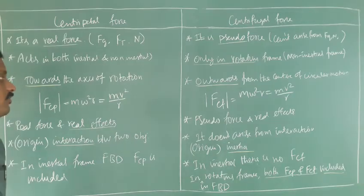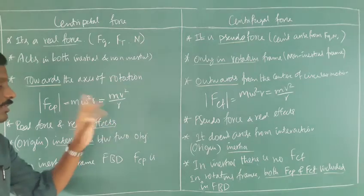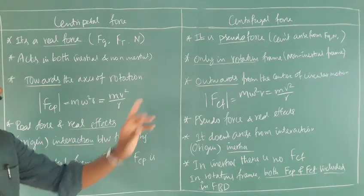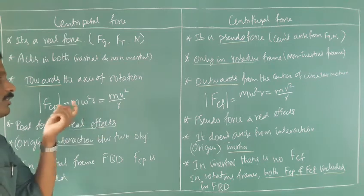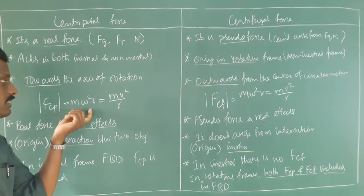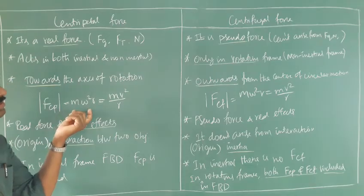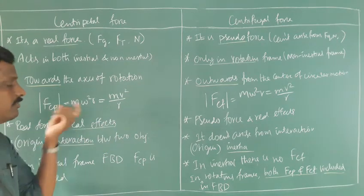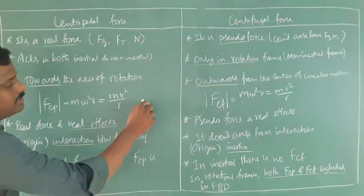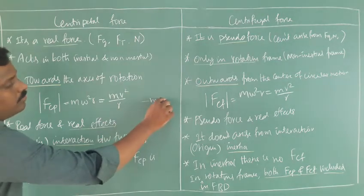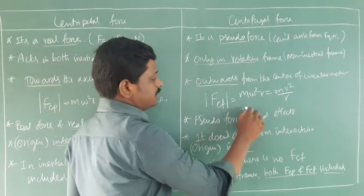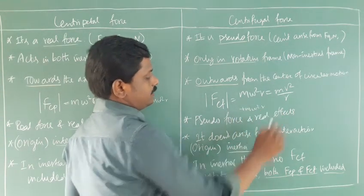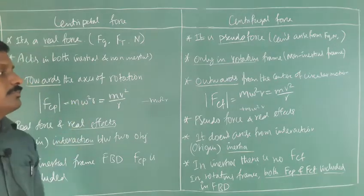The magnitude of centripetal force is m·ω²·r, which equals mv²/r. The magnitude of centrifugal force is the same. In terms of sign, centrifugal force is positive (+m·ω²·r) and centripetal force is negative (−m·ω²·r), as it is directed towards the center. Magnitude-wise, both are equal and opposite.